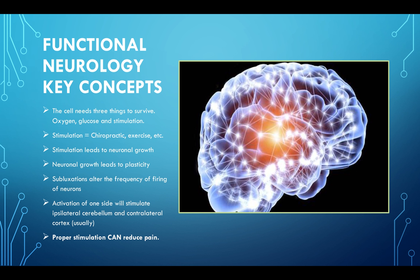When you're doing adjustments, from a functional neurology perspective, activation of one side will usually stimulate the ipsilateral cerebellum, so same side, and the contralateral cortex. Proper stimulation can help reduce pain. Different modalities can help reduce pain, whether it's the adjustment, TENS unit, some sort of traction table, anything like that.